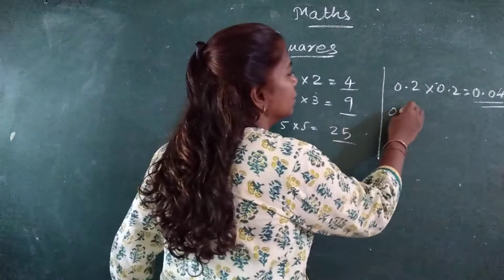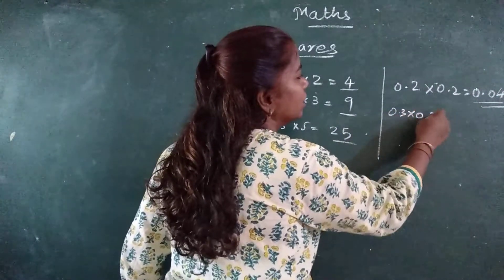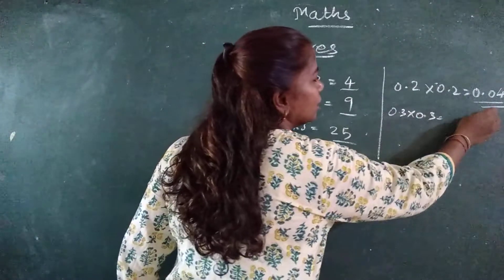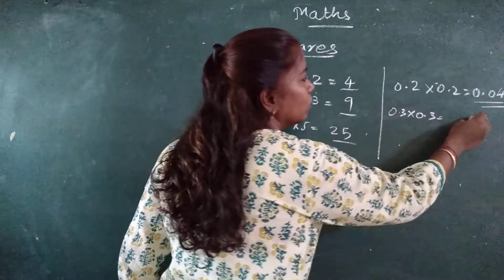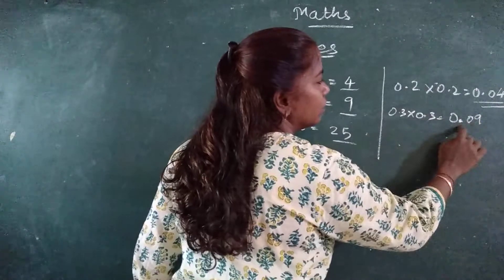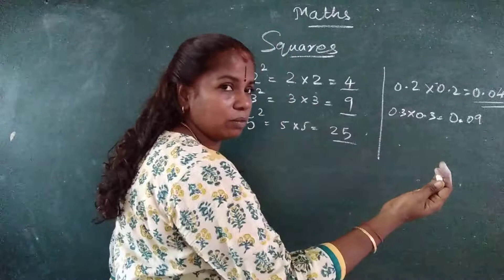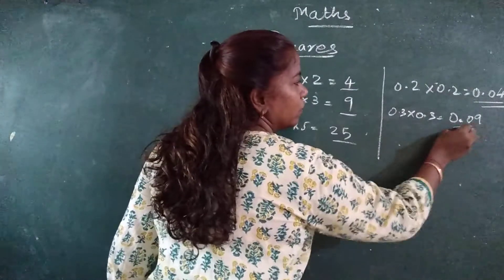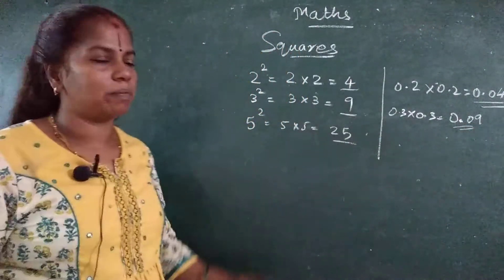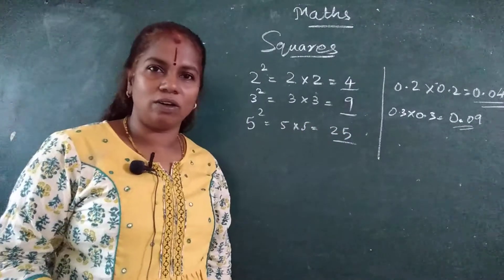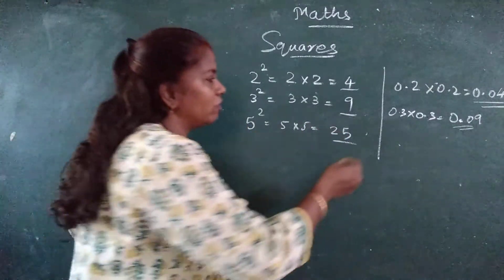Now suppose 0.3 into 0.3, how much? 3 3's are 9. One, two. So after 0, one, two. From here one, two. From that side you will count. Remember that. One, two, that point. Understood? Based on this how you will find out the square? Got it?